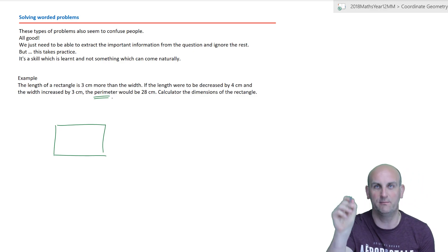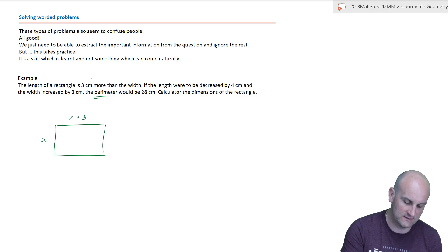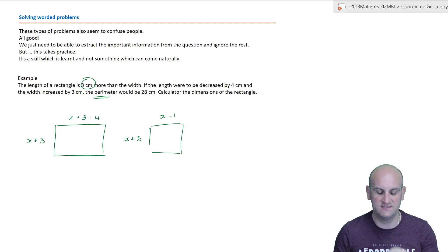If the length were to be decreased by 4 centimeters, and the width increased by 3 centimeters, the perimeter would be 28. Calculate the dimensions of the rectangle. It wants both the length and the width. So, it hasn't given me a letter. It hasn't given me anything to call these sides. I'm going to choose my own. So, the first thing I'm going to say is, let the width be x. And that means that the length must be x plus 3. The question then goes on and says, if the length were to be decreased by 4 centimeters, I'm going to subtract 4 from there. And the width increased by 3 centimeters. Okay. So, that now becomes x plus 3. The perimeter would be 28 centimeters. So, re-expressing that to give me that that would be x minus 1 and x plus 3. Now, perimeter is when you add them together. I just need to add them together. Or, in fact, I need to add two lots of them together.